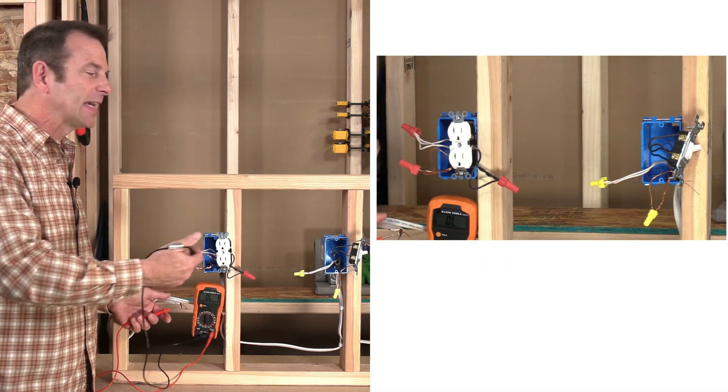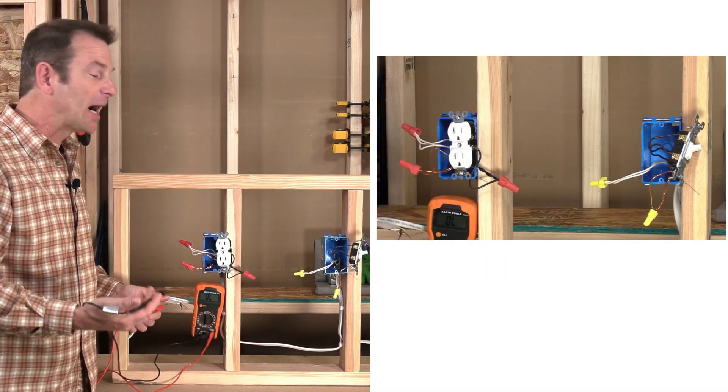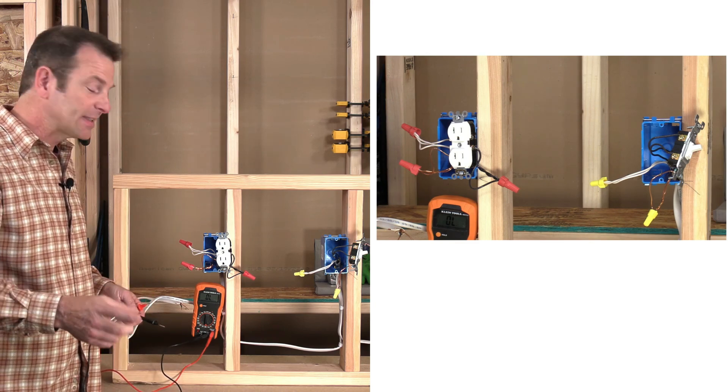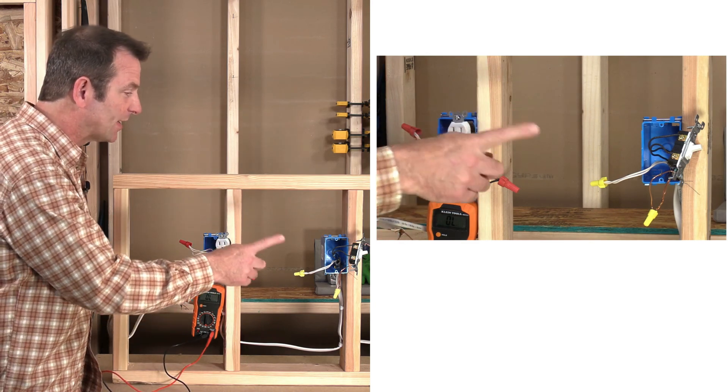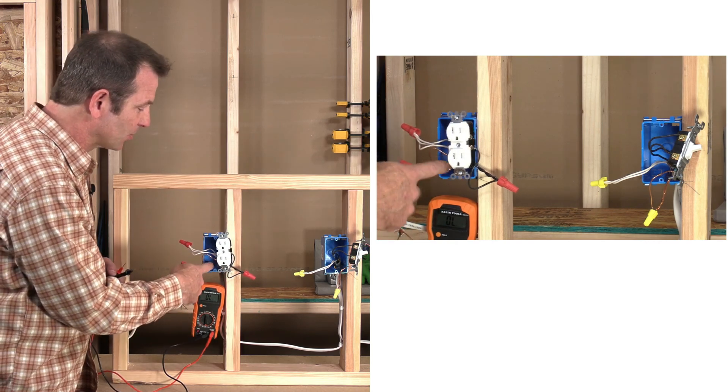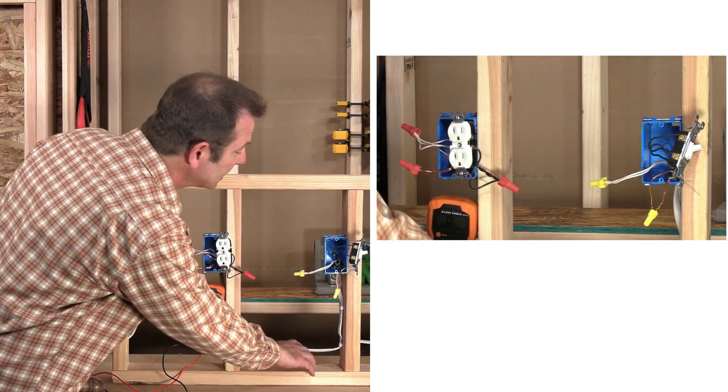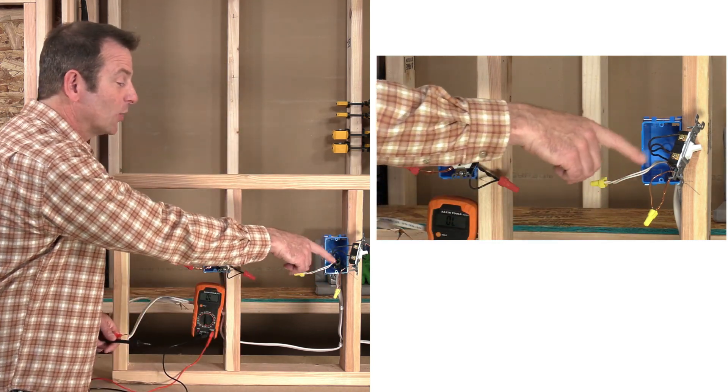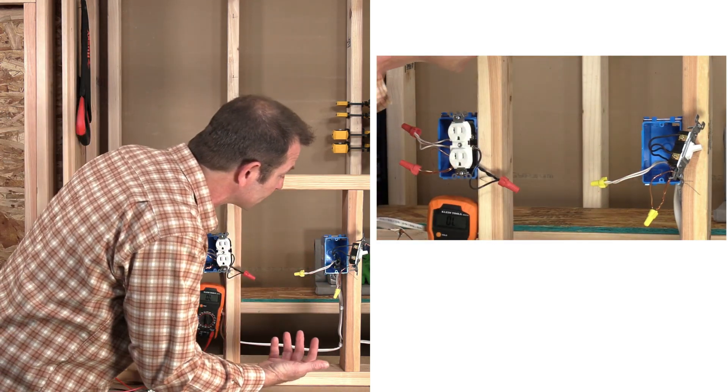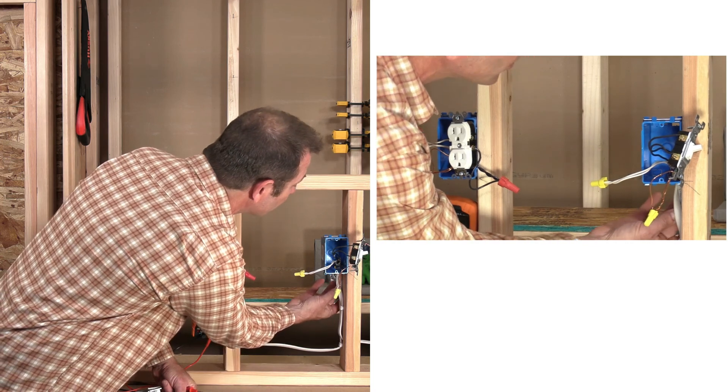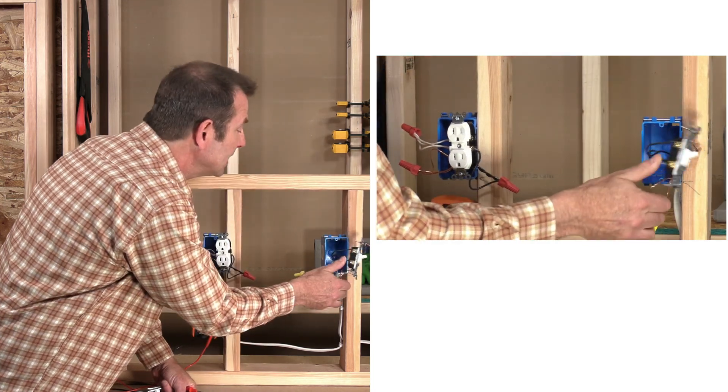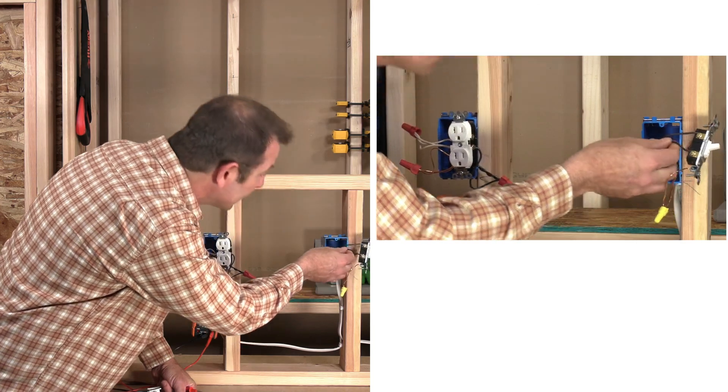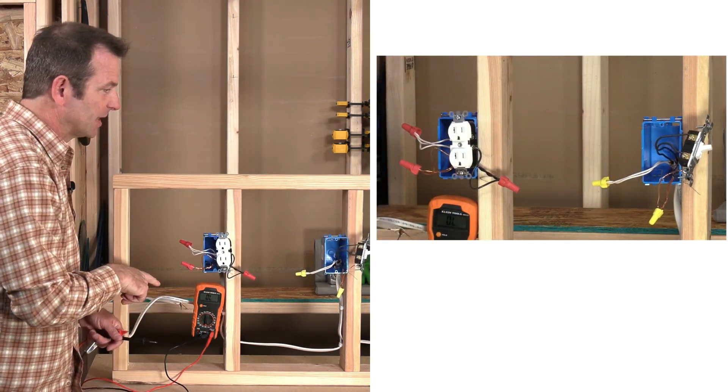My last conductor to test in this box is going to be my hot wire. The trick of this test is knowing which wire to test first. So I know that my feed wire comes in through this box and into here. I need to trace that wire and make sure that I get the right black wire. We have two of them. And if we get it mixed up, it's going to be confusing.